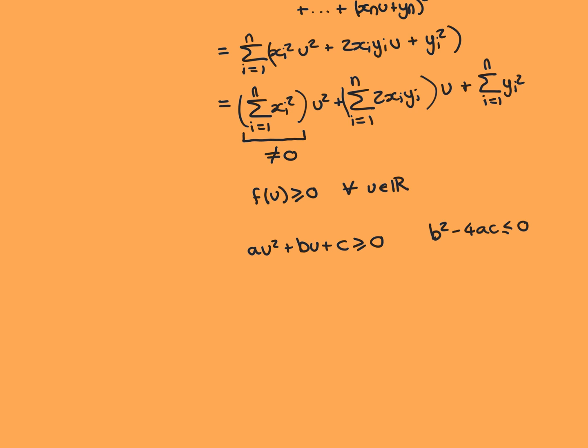Welcome back. We're in the process of proving the Cauchy-Schwarz inequality, and to do this, we've defined a quadratic function in u, and we've concluded that this quadratic function must always be greater than or equal to 0 at all points in the real line.